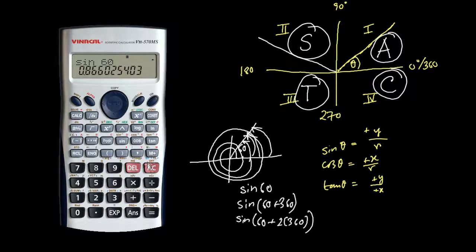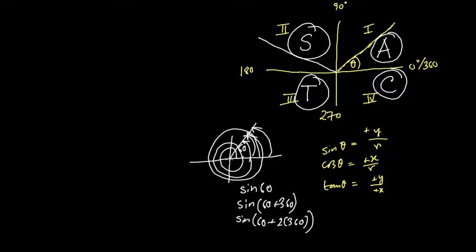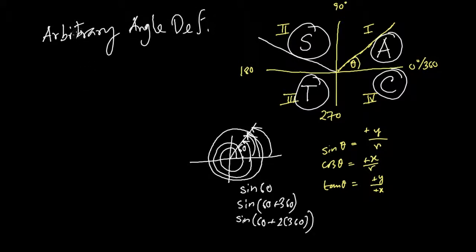For example, sine 60° equals root 3 over 2, approximately 0.866. Sine 420° gives the same value — 0.866. Sine 780° also gives the same value. This demonstrates that arbitrary angles don't refer to a triangle, since a triangle cannot have 420° or 780°. The arbitrary angle definition means the angle can keep increasing while referring to the same position. This is the definition of trigonometric ratios of the arbitrary angle.